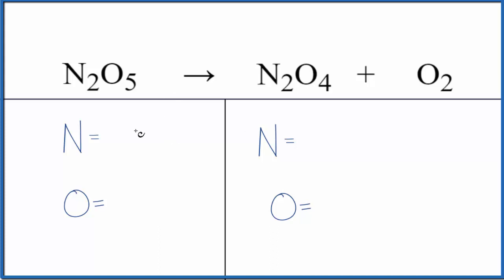So let's count the atoms up and balance the equation. Two nitrogens, five oxygens on the reactant side. Product side, two nitrogens, four oxygens, but don't forget the two oxygens out here. So we have a total of six.